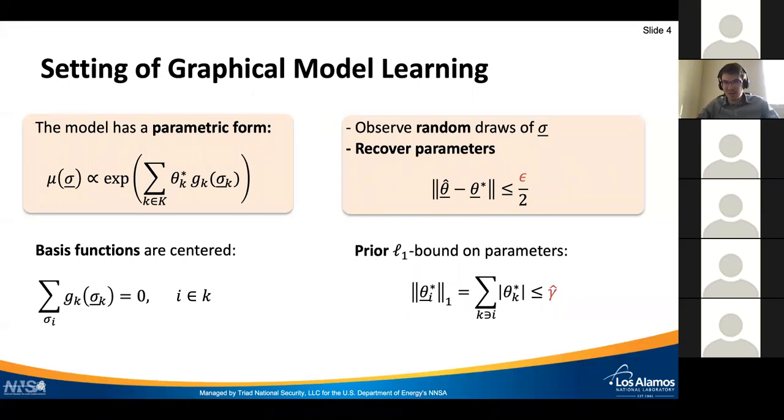We observe n independent draws from this distribution and we want to recover the parameters, estimate them to a certain error epsilon. Typically we want to work with reasonable models, which means we assume that the L1 bound on the parameters associated with each of the nodes is bounded, and we have a certain finite prior on it.